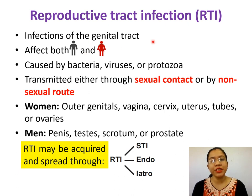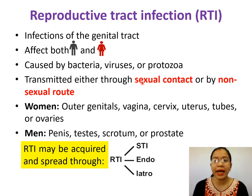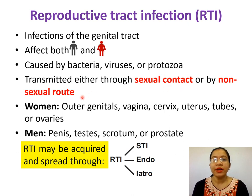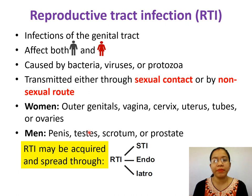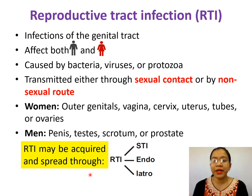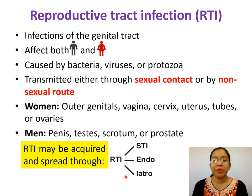Reproductive tract infections are infections of the genital tract which can affect both male and female, caused by bacteria, viruses, and protozoa, transmitted either through the sexual route or non-sexual route. In women, the outer genitals, vagina, cervix, uterus, tubes, or ovaries may be affected. In men, the penis, testis, scrotum, or prostate may be affected. RTIs may be acquired through three routes: sexual transmission, endogenously acquired, or iatrogenically induced by transcervical procedures or post-abortal procedures.